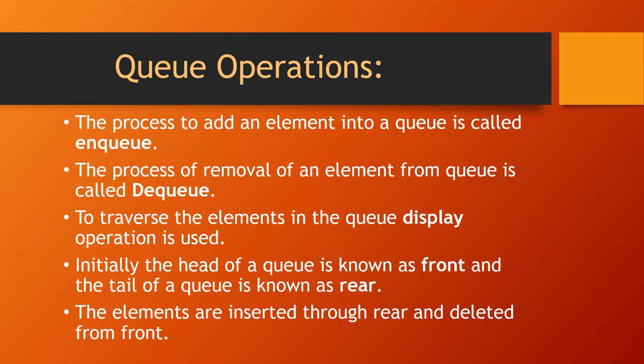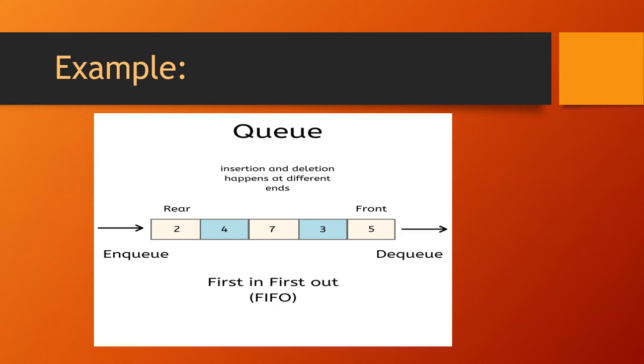What are the uses of these queue operations? Using enqueue we can insert the elements into the queue, and using dequeue we can remove the elements from the queue. To traverse the elements in the queue, display operations are used. Initially the queue contains front and rear. The elements are inserted from rear and deleted from front.